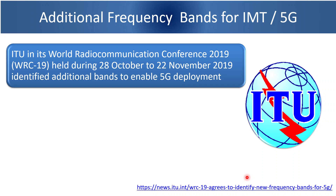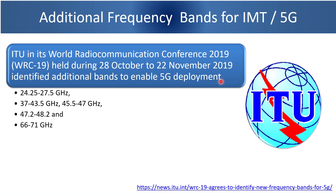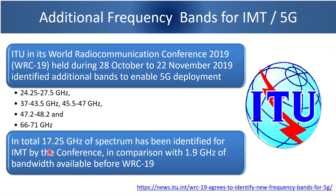ITU in its WRC 19 — World Radio Communication Conference 2019, held from 28th October to 22nd November 2019 — identified newer frequency bands. In this WRC 19 meeting, additional bands were identified to enable 5G deployment. These new bands are in the ranges of 24 to 27 GHz, 37 to 43 GHz, 45 to 47 GHz, 47 to 48 GHz, and 66 to 71 GHz. In total, 17.25 GHz of spectrum was identified in the WRC 19 meeting.